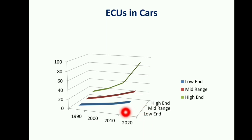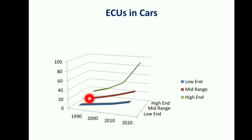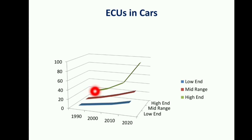In the low end car in the year 1990, it starts with around five to seven, then ten, and by 2020 in low end vehicles we have around 10 to 12 ECUs. In mid range, it started from around seven to eight and goes to 15, then goes around 35 and near to 40. In high end luxury cars, in the 1990s we had ECUs near to 20, and now it goes around 70 to 90 as well.